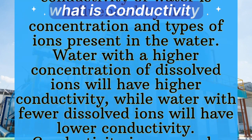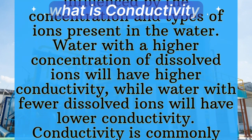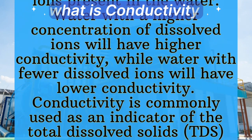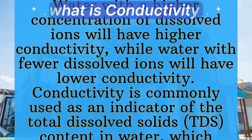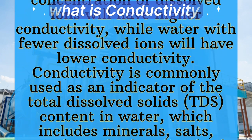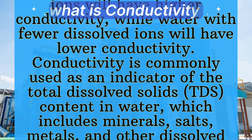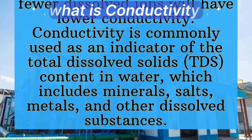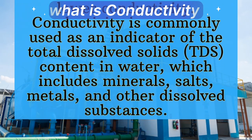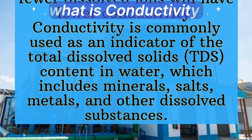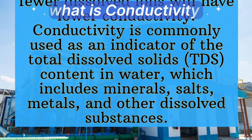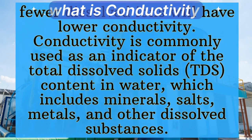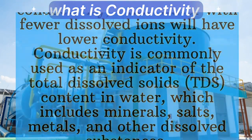Water with a higher concentration of dissolved ions will have higher conductivity, while water with fewer dissolved ions will have lower conductivity. Conductivity is commonly used as an indicator of the total dissolved solids contained in water, which includes minerals, salts, metals, and other dissolved substances.